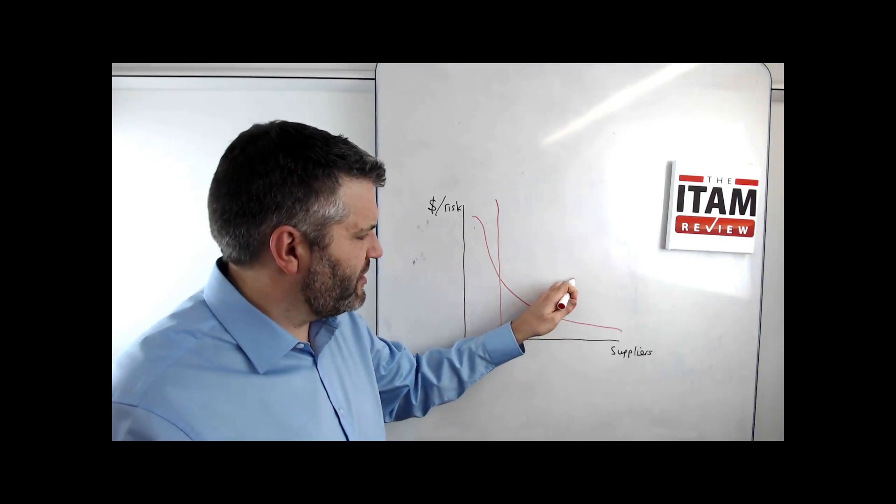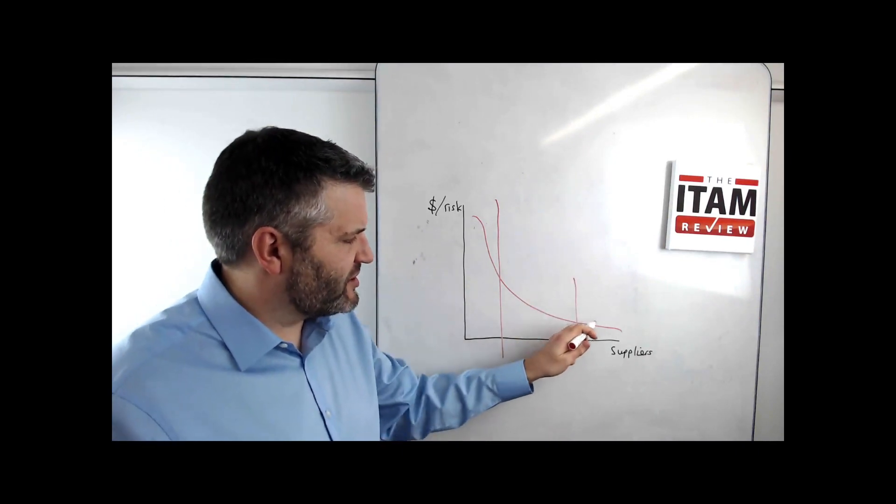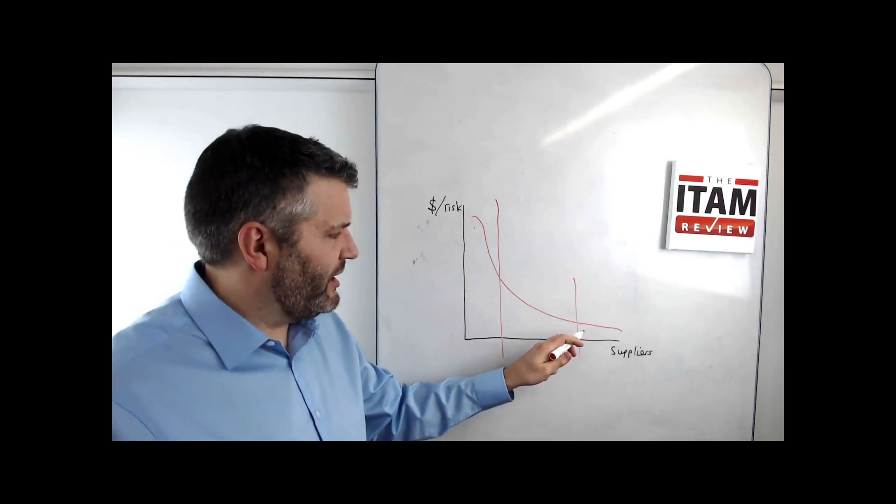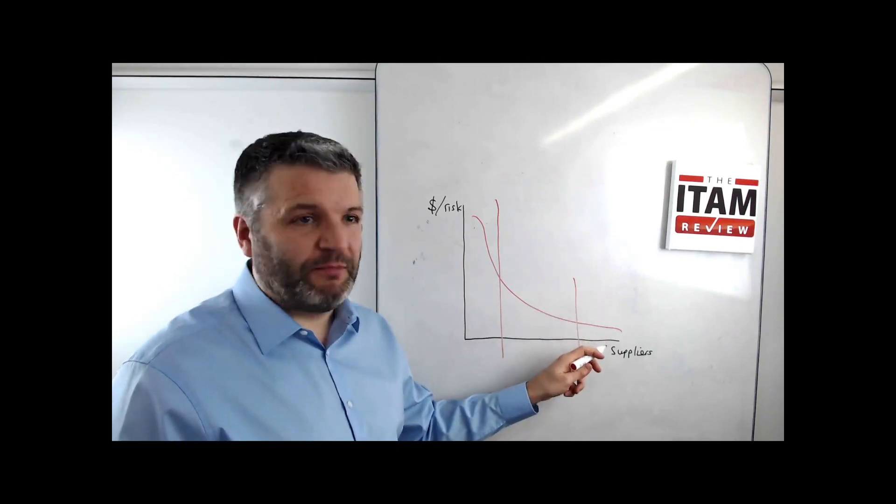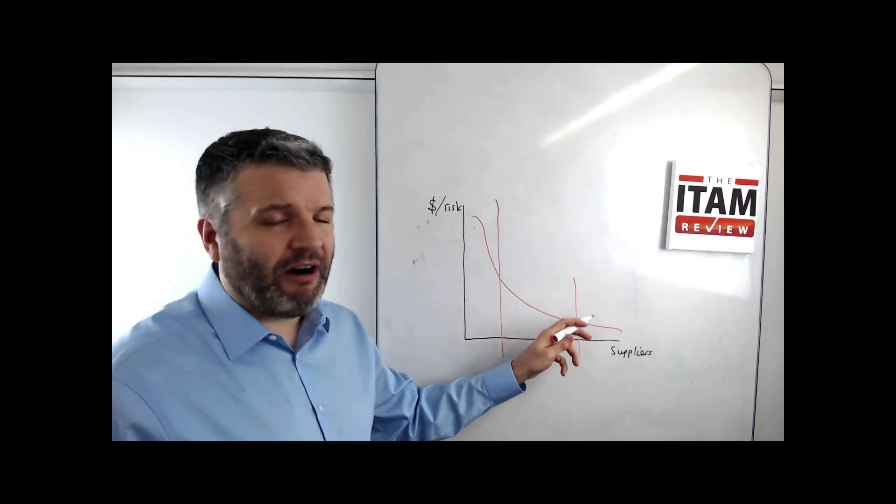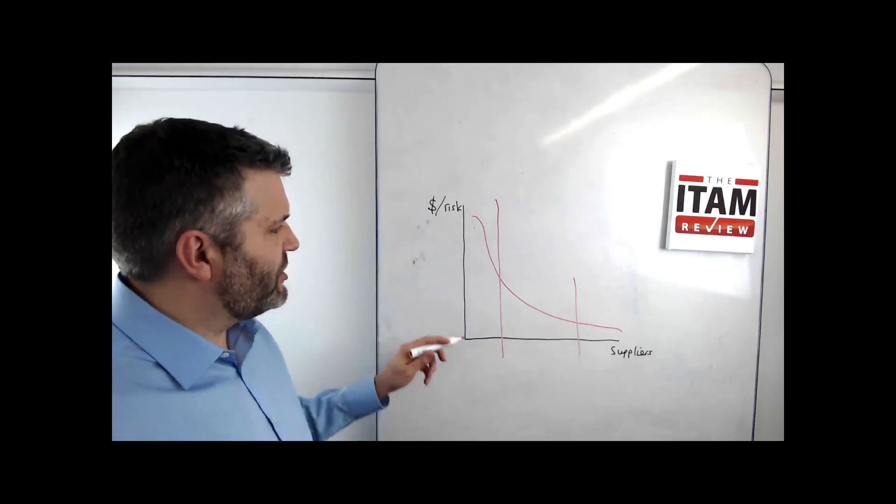And at this end, you've got the law of diminishing returns, which is for some of the assets in your environment. Mouse mats, for example, it's going to cost more to manage them than the cost of the mouse mat itself. So it's daft to actually try to manage that.